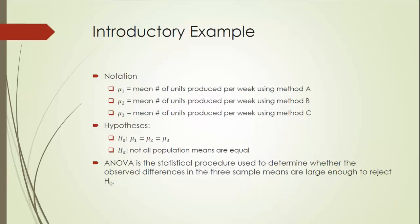Following convention, we are going to define the three population means as mu1, mu2, and mu3. The null hypothesis is that mu1 equals mu2 equals mu3, and the alternative hypothesis is that not all population means are equal. ANOVA is the statistical procedure used to determine whether the observed differences in the three sample means are large enough to reject H0.